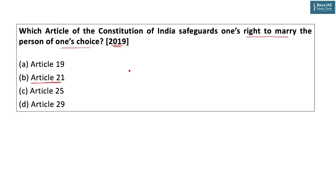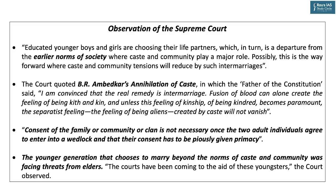The question was asked in prelims 2019 but not directly in the subsequent mains, and since the issue keeps reappearing, it is an important topic. The Supreme Court observed that educated younger people are choosing their own life partners — a departure from earlier norms where caste and community played a major role. The court says this is possibly the way forward to reduce caste and community tension.